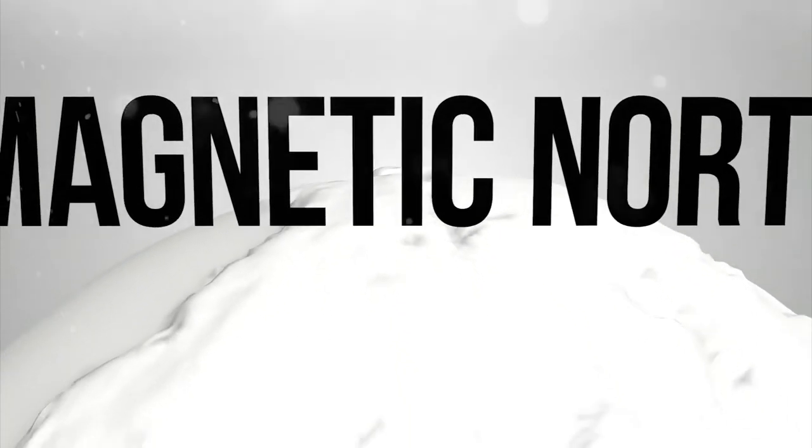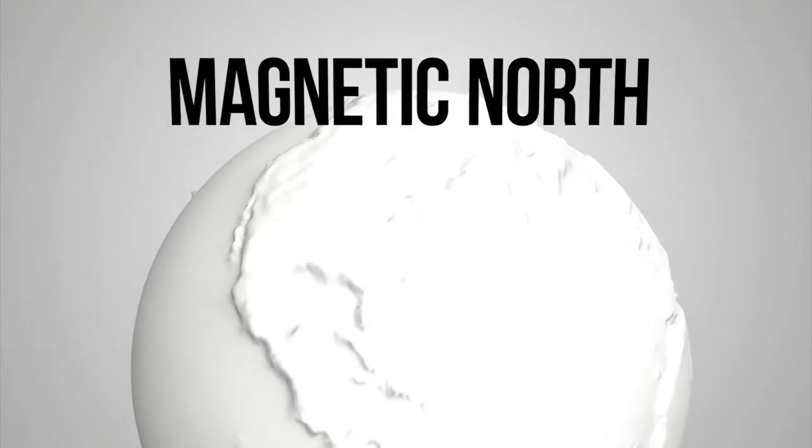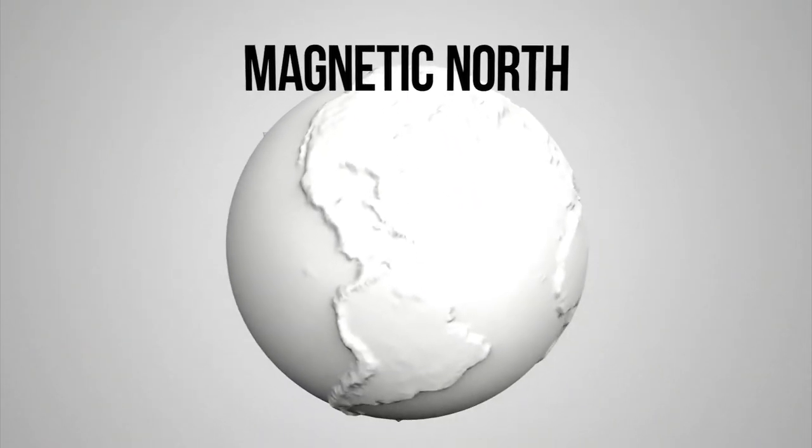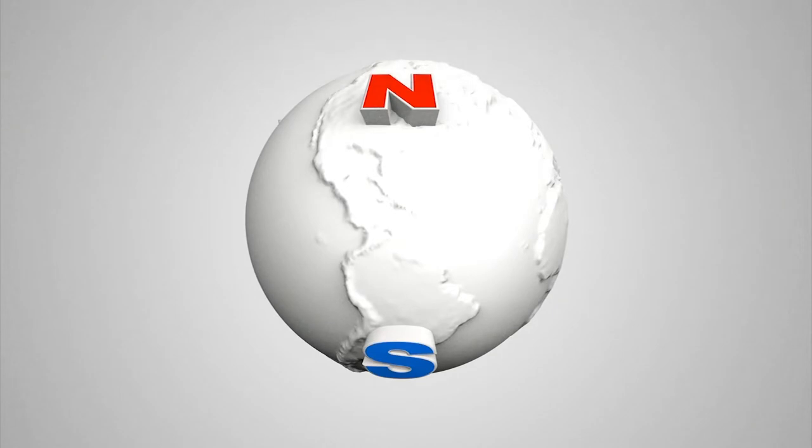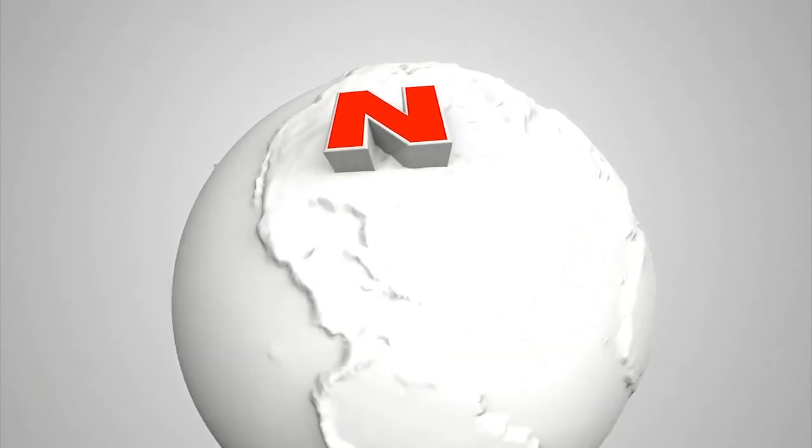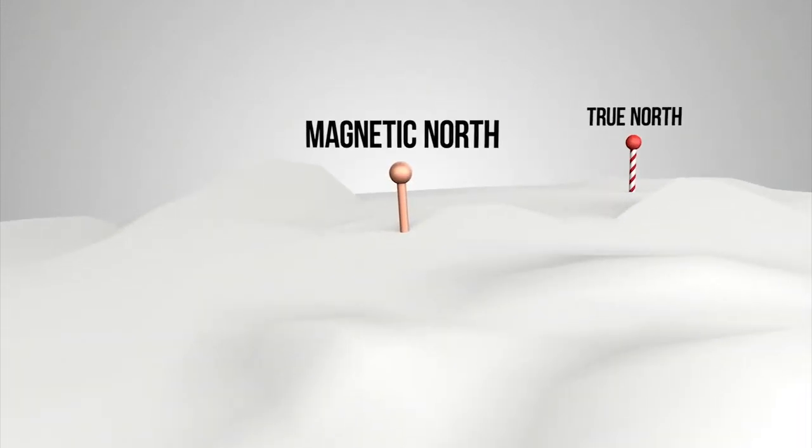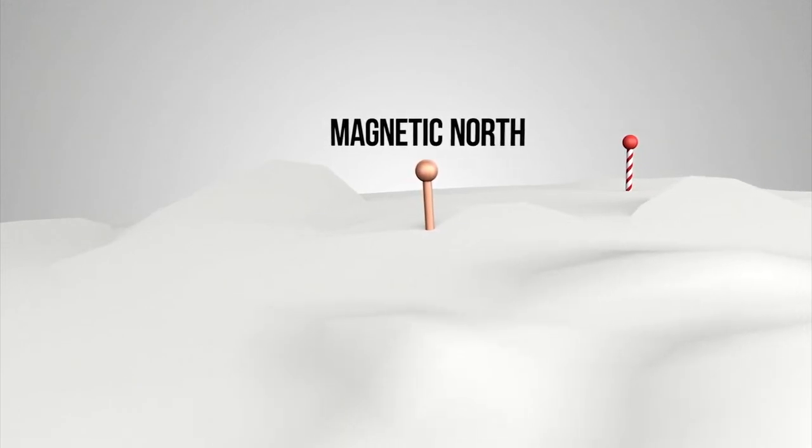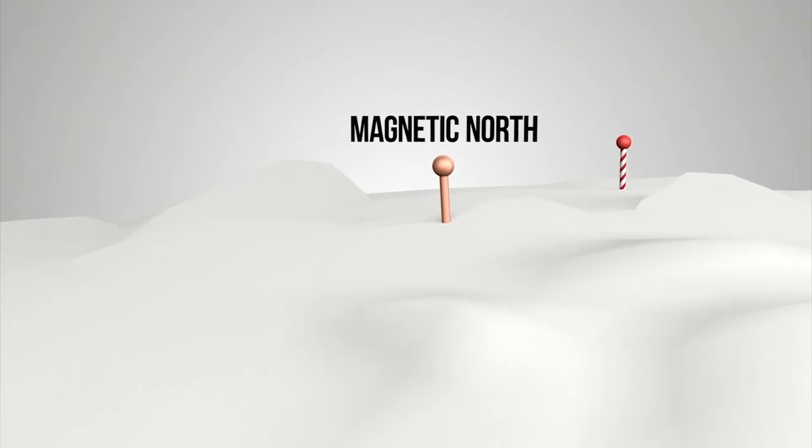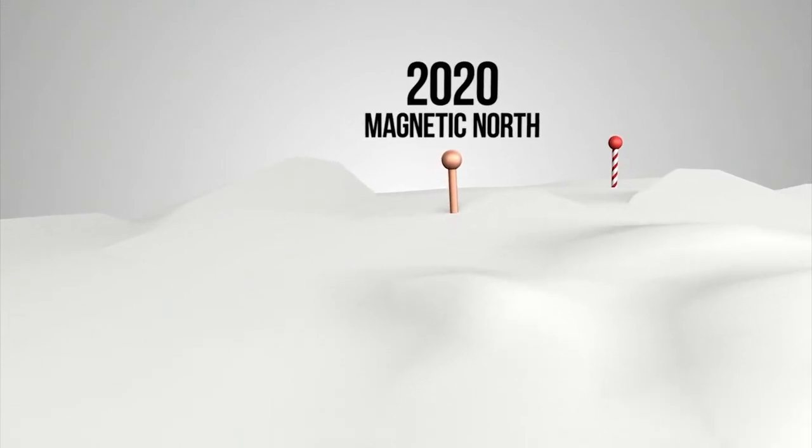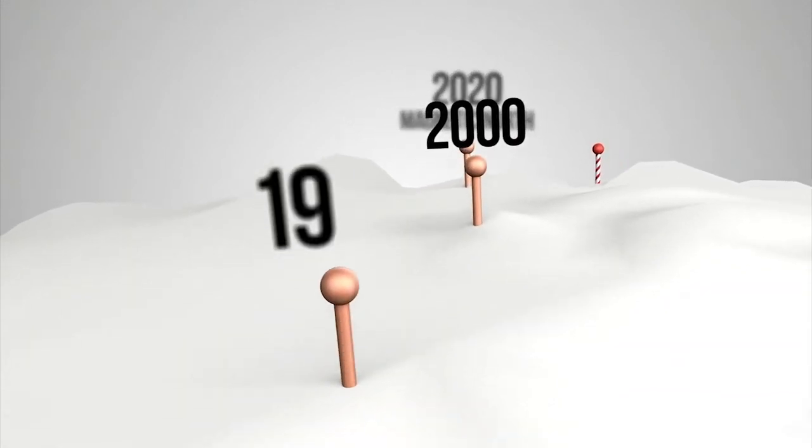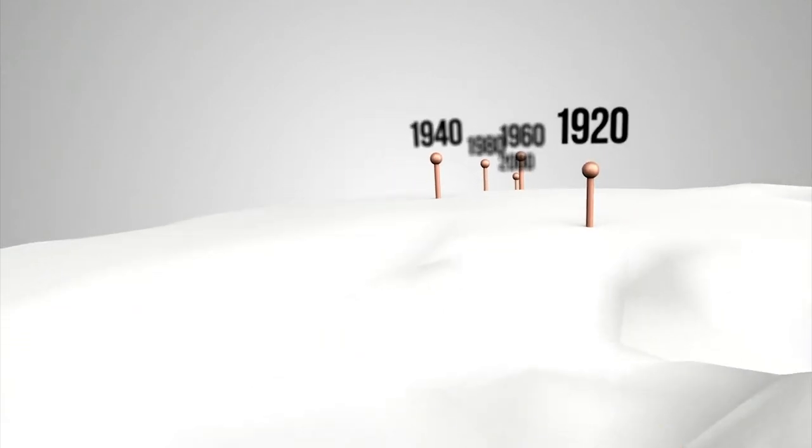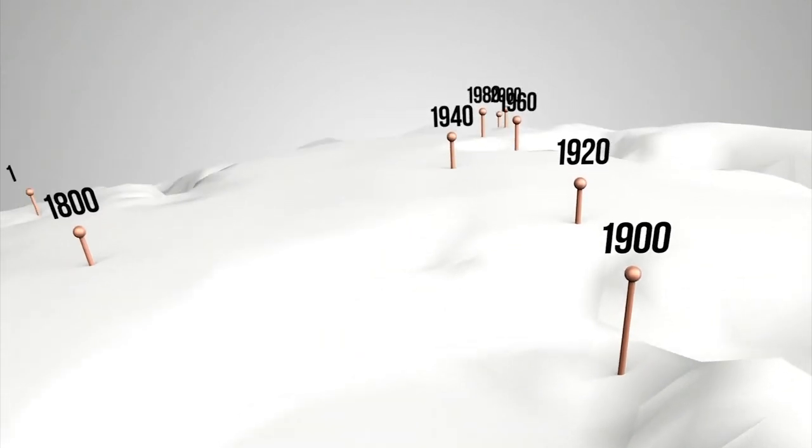For magnetic north, think of the Earth as one big magnet, kind of like that of a bar magnet. Therefore, there are magnetic north and south poles. Magnetic north corresponds to the north magnetic pole of the Earth's magnetic field and is the north reference a magnetic compass seeks. Important note: magnetic north migrates over time as the Earth's magnetic field is constantly changing.